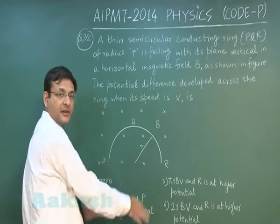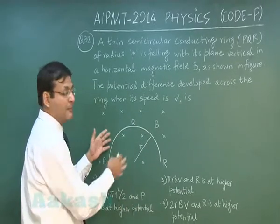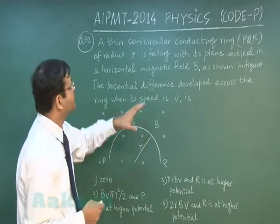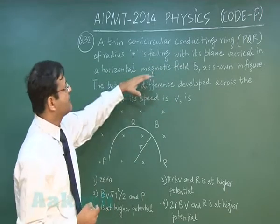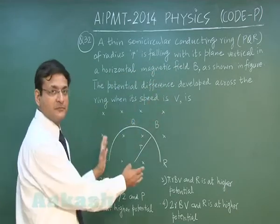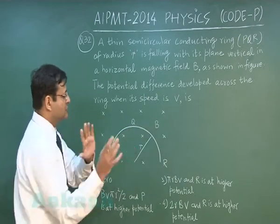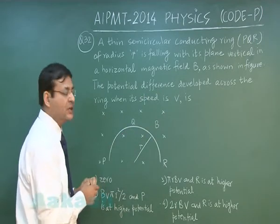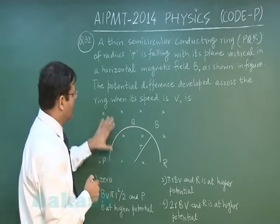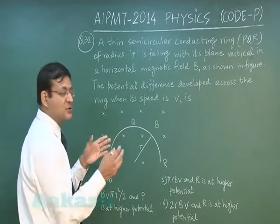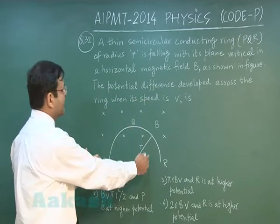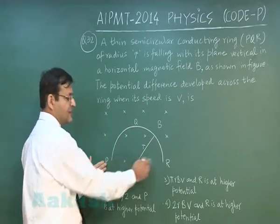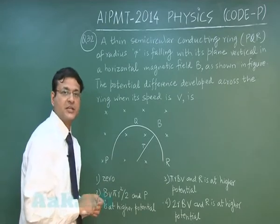You see it is falling in a vertical direction and here a horizontal magnetic field is there, is falling with this plane vertical in a horizontal magnetic field B as shown in figure. As I explained here, B has been written. So it is going perpendicular into the plane of this board and cross is indicating it is going inside. Now, the potential difference developed across the ring when its speed is v between these two ends, you have to find out what is the potential difference.